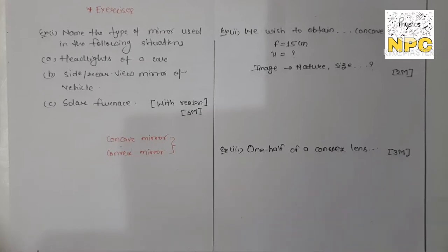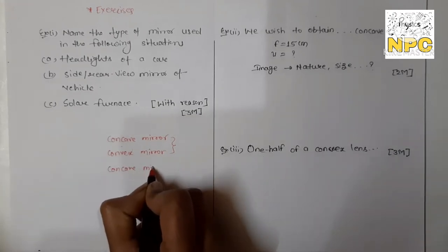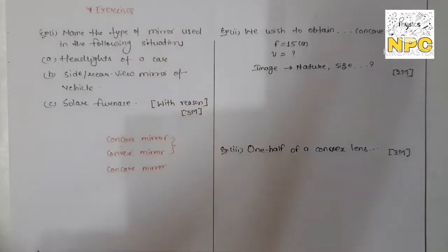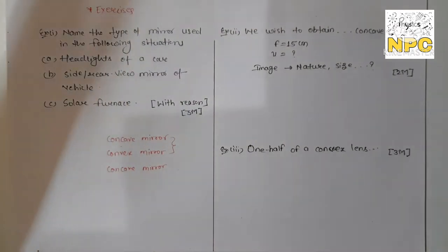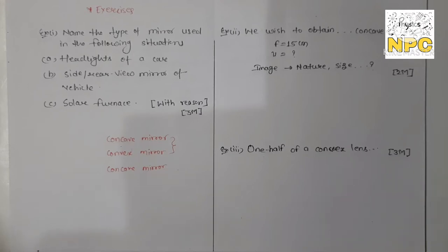Third situation is the solar furnace. In a solar furnace, high intensity is needed. Here we use a concave mirror. Why? Because in a concave mirror, sunlight rays coming from infinity are parallel to the principal axis, and after reflection they meet at one point — the focal point. So all rays meet at focus, giving high intensity rays. Solar furnace is an optical system which converts light to heat that can be used for different purposes, such as in thermal power plants.